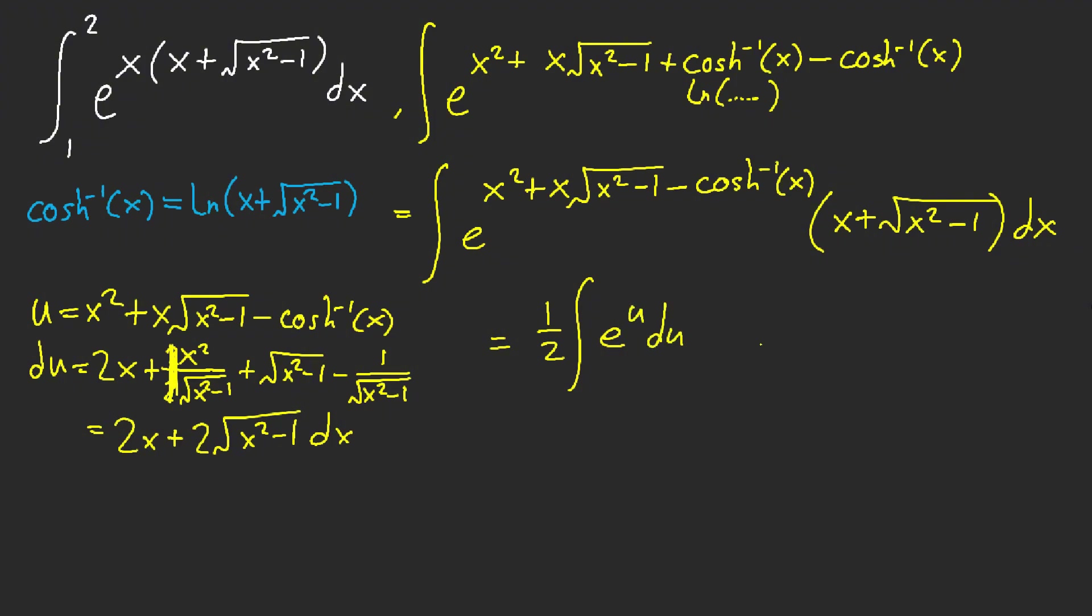Oh god, the pain. The agony. If you've forgotten the half, I am so sorry for you. But it is a half. So the answer is one half of e to the rest of this. So it's x squared plus x square root of x squared minus one minus inverse cosh.